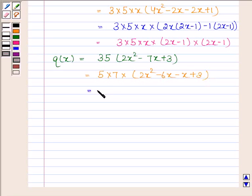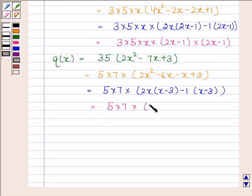This is equal to 5 into 7 into 2x into x minus 3 minus 1 into x minus 3. This is equal to 5 into 7 into 2x minus 1 into x minus 3.